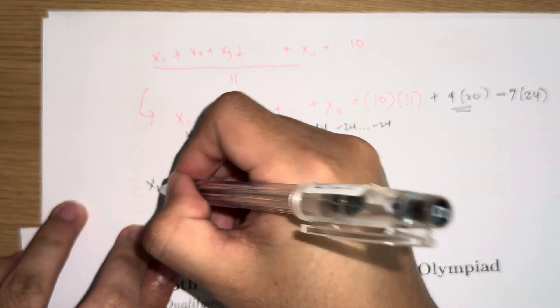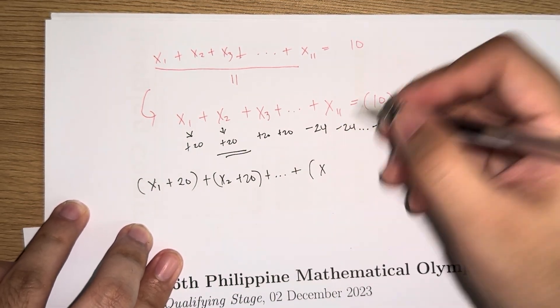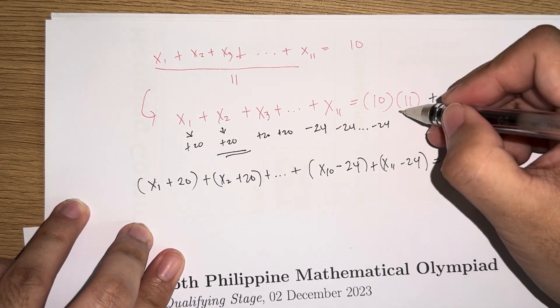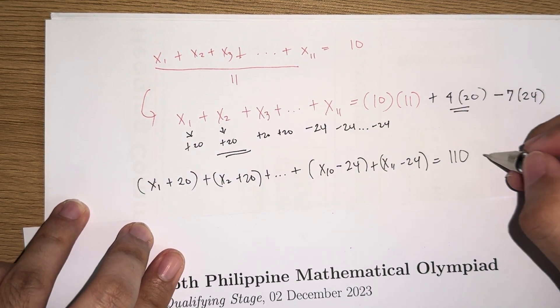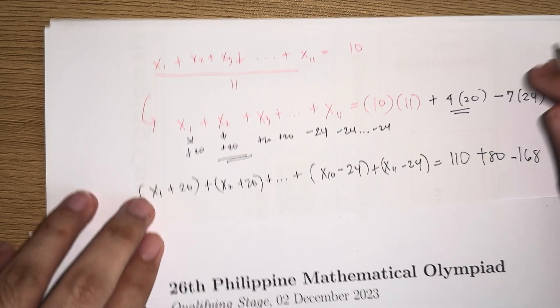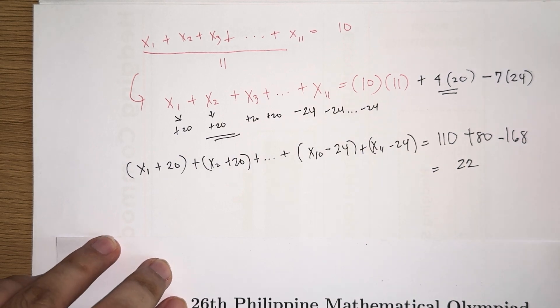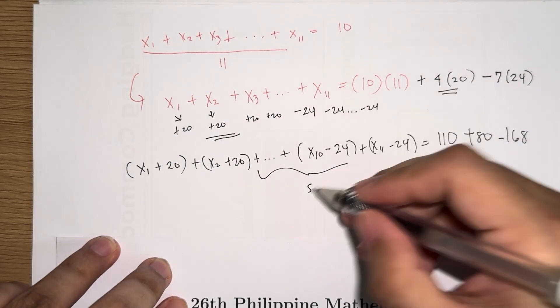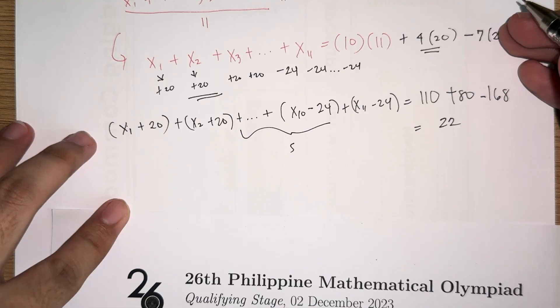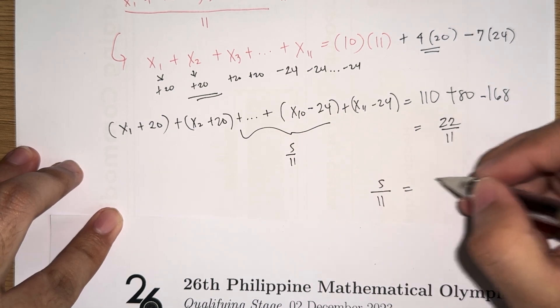So we have here x1 plus 20, plus x2 plus 20, plus and so on, plus x10 minus 24, plus x11 minus 24, is equal to 10 times 11, so that's 110. 4 times 20 is 80, and then 7 times 24 is 168. So the right side is equal to 22. So let's call this new sum S. So we have S is equal to 22. If we want to find the mean of this set, we just divide by the number of elements, which in this case is 11. So we divide both sides by 11, so we get that the mean is 2.